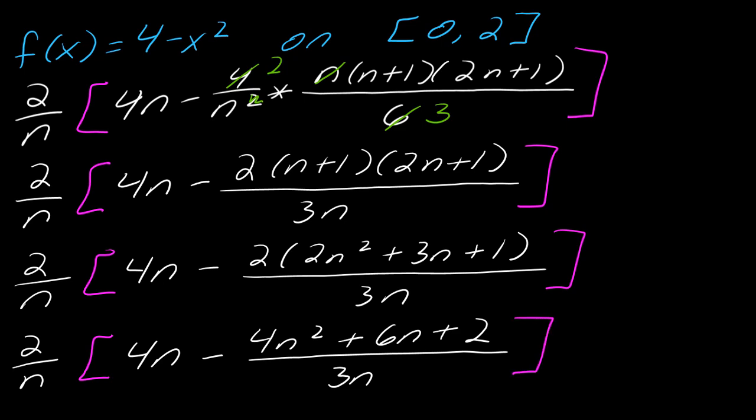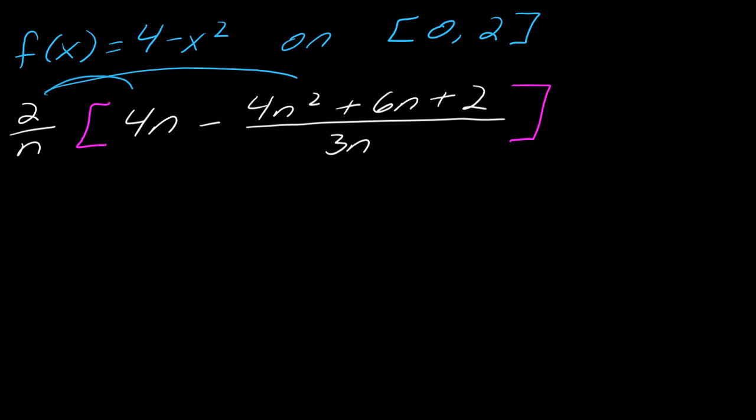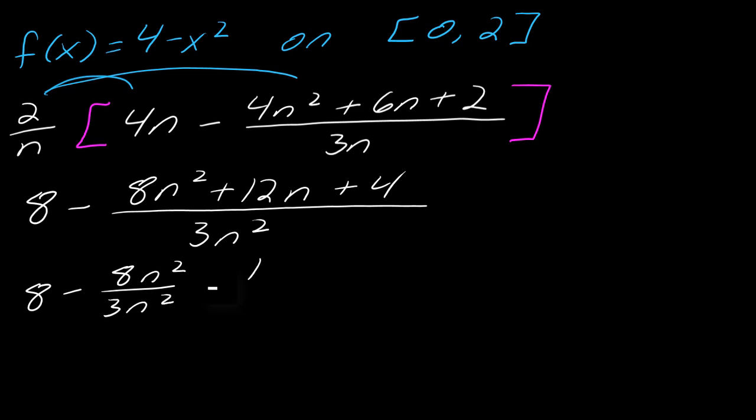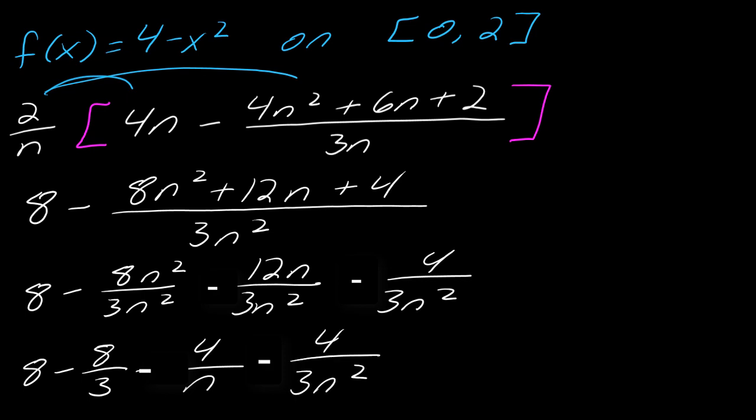Okay, so now I guess I will go ahead and I will distribute this 2 over n in. I could keep going with the inside. So like I said, it's just whatever you feel like doing, honestly. If you have some other way that you did it, that's okay as long as you get to the same final answer. So let me just clear some space again. So now this will be 8 minus, let's see, multiplying all the tops by 2, this will be 8n squared plus 12n plus 4. And then in the bottom, I get, let's see, 3n squared. So now to make my life easier, what I think I'm going to do is just break up all these fractions. So I get 8 minus 8 over n squared over 3n squared, 12n over 3n squared, and then 4 over 3n squared. So now I get 8 minus 8 thirds minus 4 over n minus 4 over 3n squared.